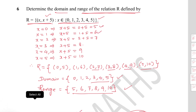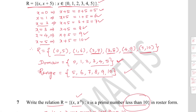When x = 2, y = 7; x = 3, y = 8; x = 4, y = 9; x = 5, y = 10. In roster form: R = {(0,5), (1,6), (2,7), (3,8), (4,9), (5,10)}. Domain is the set of all first elements: {0, 1, 2, 3, 4, 5}. Range is the set of all second elements: {5, 6, 7, 8, 9, 10}.